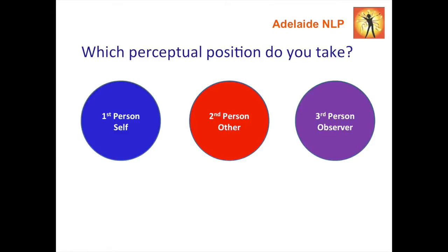The three perceptual positions are first person, second person, and third person. By looking at any situation from these three vantage points, we get a lot more information than if we just looked at it from one point, which is what we normally do. The first person point of view is looking at things through your own eyes, with your own judgments, your view on the world, how you think things should be.